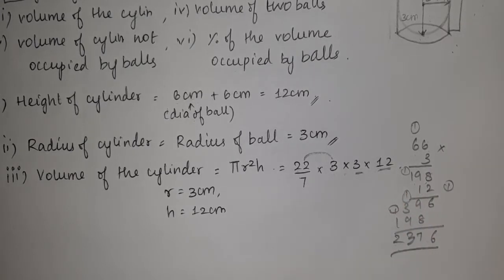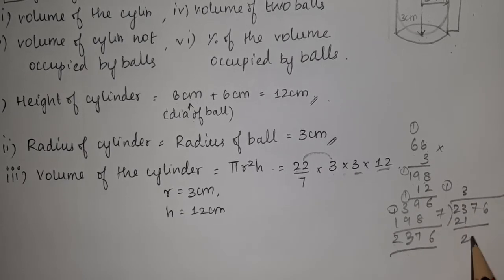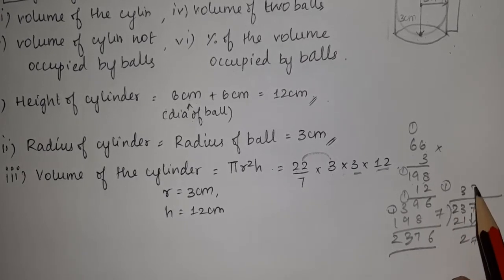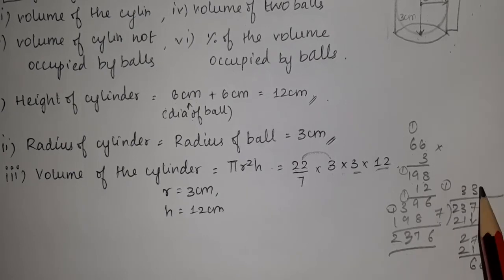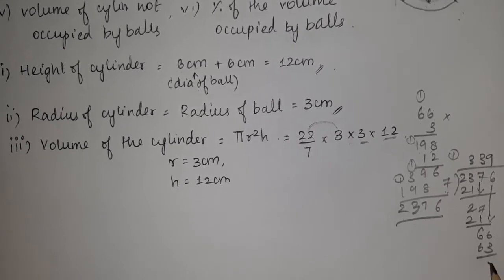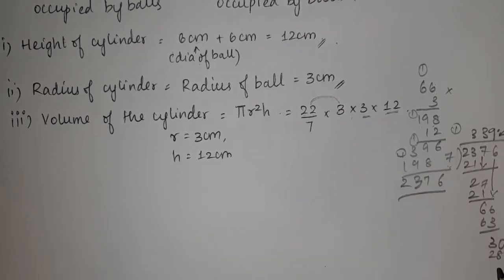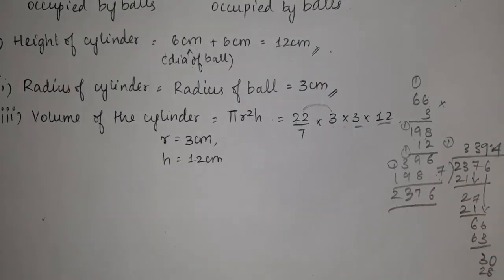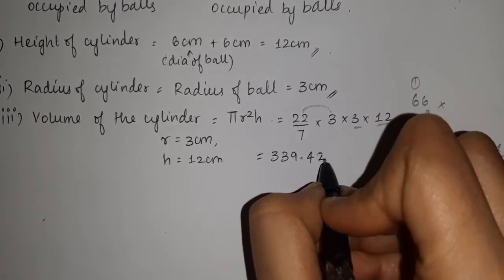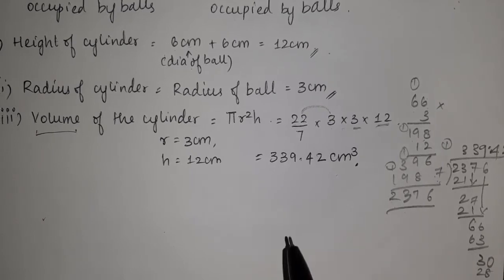Now dividing 2376 by 7: 7 threes are 21, remainder 2; continuing the division we get 339.42. So the volume of the cylinder is 339.42 cubic centimeters.